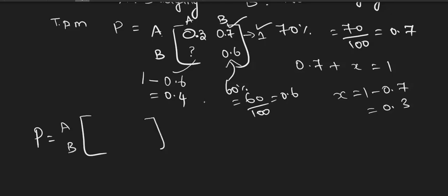Rewriting it neatly: states A and B, where A is for studying and B is for not studying. If he studies one night, he is 70% sure not to study the next night — A to B is 0.7. If he does not study one night, he is 60% sure not to study the next night — B to B is 0.6. So 1 minus 0.7 is 0.3 and 1 minus 0.6 is 0.4; each row total is 1. We are done with the transition probability matrix.